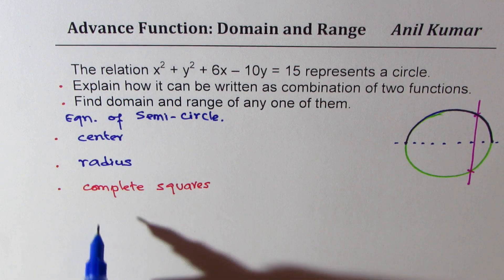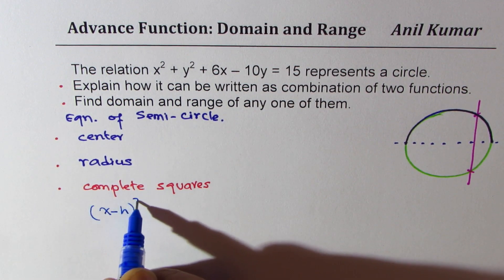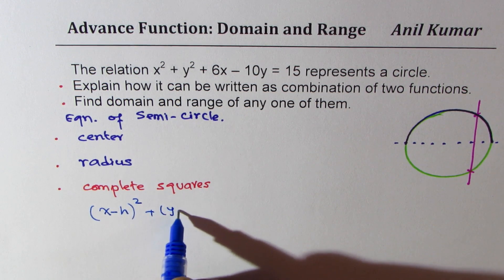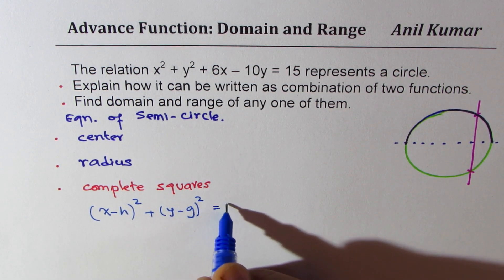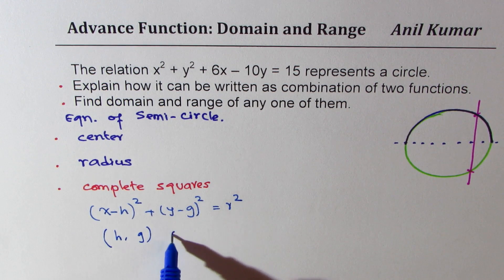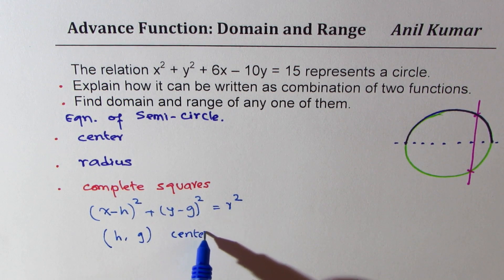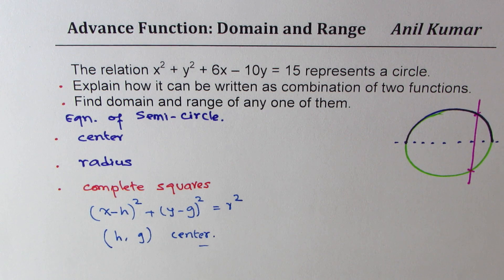So if I am able to write this equation as x minus h whole square plus y minus g whole square equals to r square, we know that h and g is the center. So that is the strategy. Now, you can actually now pause the video, answer this question and then look into my suggestions.